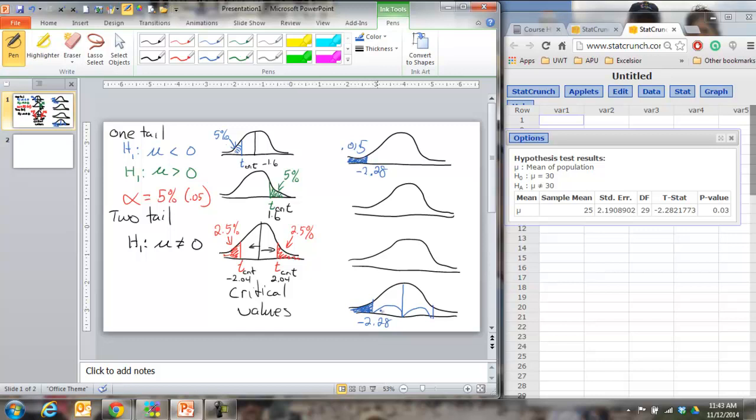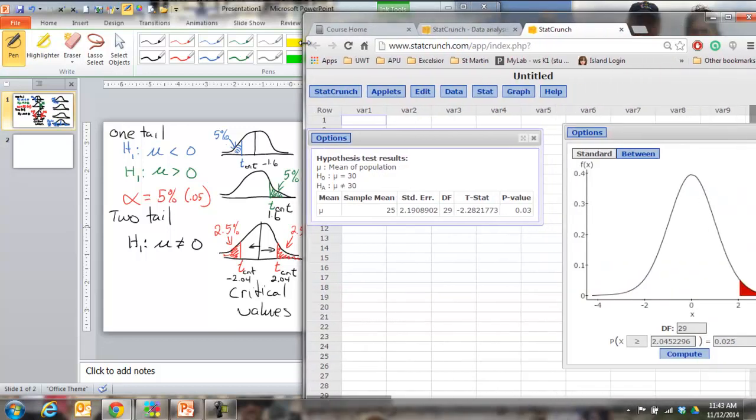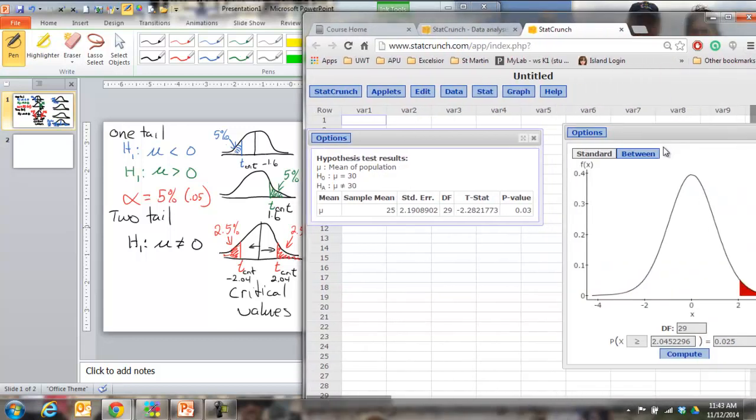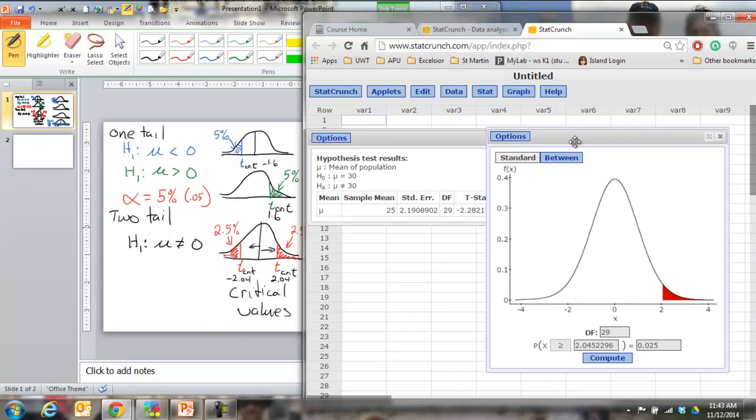So what the p-value is, is it's taking the probability of getting something this far away or further, to the more extreme. And then it's doubling it because it's equally likely that you would have had a sample that was just as far away in the upper direction. So that's why you get a p-value of .03 for this one and you'll see that StatCrunch doubled it for you. You don't have to double anything.